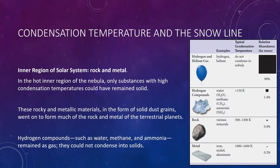In the hot inner region of the solar nebula, only substances with high condensation temperatures could remain solid. These rocky and metallic materials, as solid dust grains, eventually formed much of the rock and metal of the terrestrial planets. Hydrogen compounds such as water, methane, and ammonia remained as gas—they could not condense into solids in the warmer inner solar system.